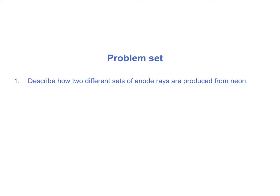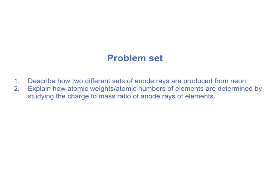We have a short problem set to provide more active learning. Please describe how two different sets of anode rays are produced from neon — explain in a few lines why there are two sets of rays produced from neon. Also explain how atomic weights and atomic numbers of elements are determined by studying the charge-to-mass ratio of anode rays of different elements. You can send your responses as a PDF to the discussion board.